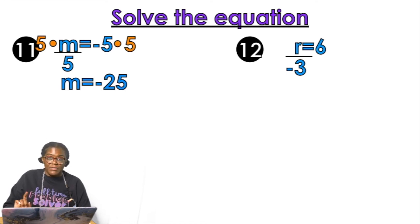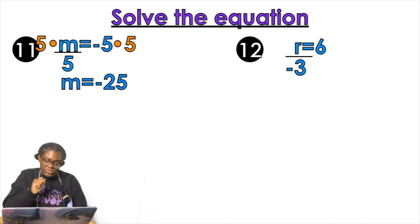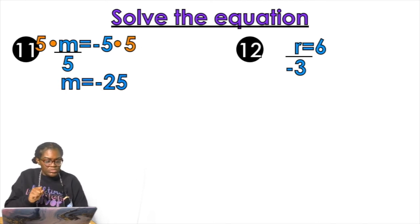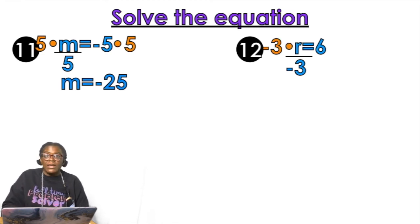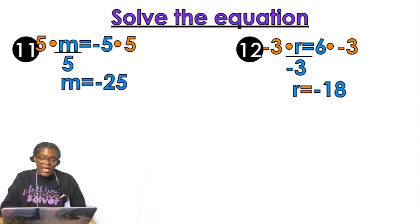Do that last one by yourself. I'm going to sing. Okay. So times three, times three. R equals negative 18. Sorry.